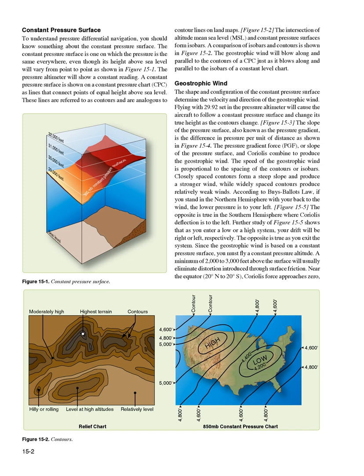Geostrophic wind: the shape and configuration of the constant pressure surface determine the velocity and direction of the geostrophic wind. Flying with 29.92 set in the pressure altimeter will cause the aircraft to follow a constant pressure surface and change its true height as the contours change. Figure 15-3 shows the slope of the pressure surface, also known as the pressure gradient, which is the difference in pressure per unit of distance as shown in Figure 15-4. The pressure gradient force (PGF) and Coriolis combine to produce the geostrophic wind.